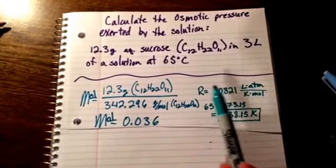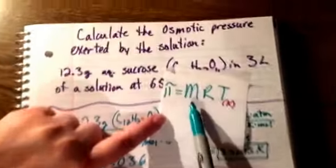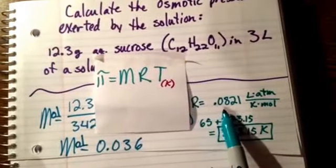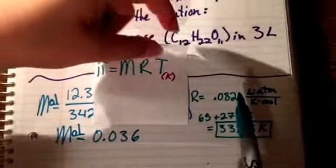To begin, we're going to remember that our osmotic pressure formula is molarity times our R constant, which is 0.0821 liter atmosphere per kelvin mole, times our temperature, which will always be in kelvins.